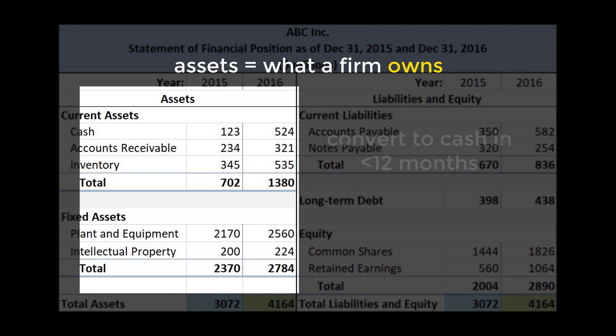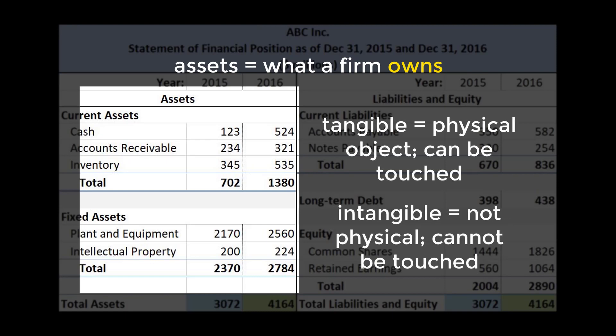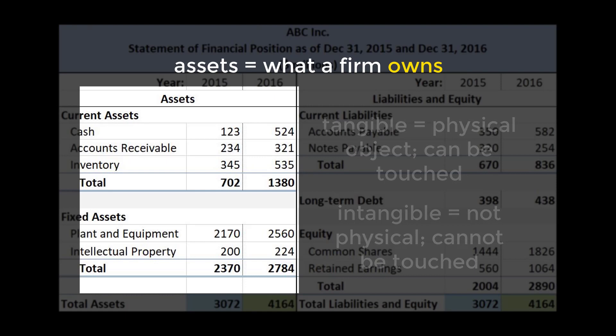Current assets are things that convert to cash within 12 months. One example is inventory, as inventoried items typically sell within a year. Fixed assets, on the other hand, are long-lived and typically provide value for more than 12 months. Things such as the actual manufacturing plant and equipment are tangible or physical assets. Intellectual properties like trademarks and copyrights are intangible.